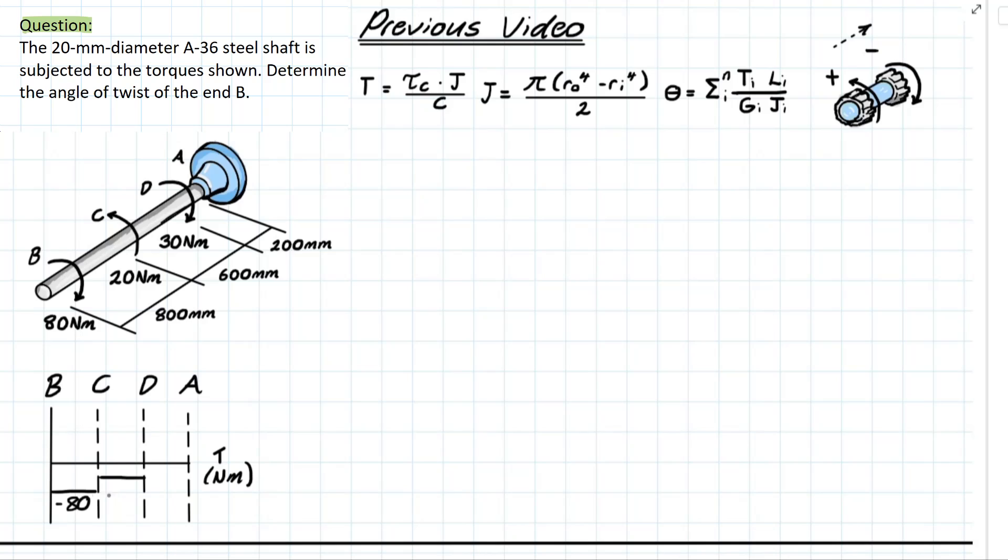Moving on to the next point we have 20 in the opposite direction in the counterclockwise meaning that we're going to take 80 and add a positive 20 to it meaning that we're going to be left with negative 60.